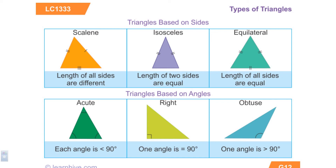When classifying triangles based on angles: an angle less than 90 degrees is acute, so when all the angles are less than 90 it's an acute triangle. A right angle measures exactly 90 degrees, and if a triangle has one right angle — because that's all it can have — it's a right triangle. The other two angles in a right triangle would be acute.